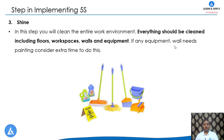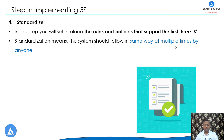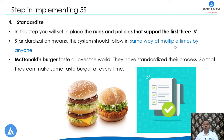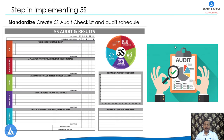The fourth S is Standardize. This is a very important step where we place the rules and policies that support the implementation of the first three S's. Standardization means the system should be followed the same way at all times by anyone — there is complete clarity on how to do a particular activity. As an example, McDonald's burgers taste the same all over the world because they have standardized their processes. For standardization, we create a 5S audit checklist and audit schedule. With the audit results, we identify whether there is improvement in 5S activity and which zones are performing well or need extra resources.